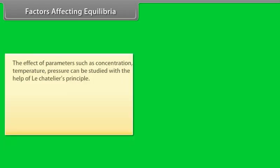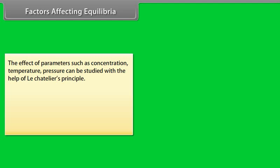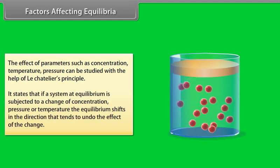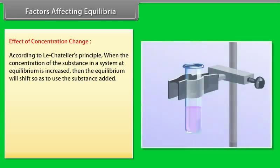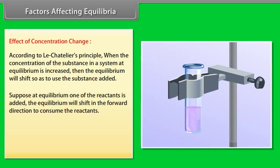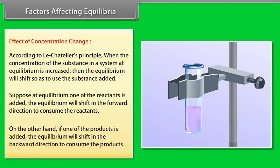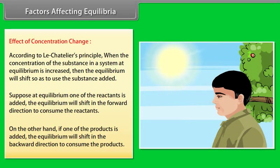Factors Affecting Equilibria: The effect of concentration, temperature, and pressure can be studied using Le Chatelier's principle, which states that if a system at equilibrium is subjected to a change in concentration, pressure, or temperature, the equilibrium shifts in the direction that tends to undo the effect of the change. Effect of Concentration Change: When concentration of a substance is increased, the equilibrium shifts to consume the added substance. If a reactant is added, equilibrium shifts forward; if a product is added, it shifts backward. For example, on a humid day we sweat more because surrounding air has a large amount of water vapor.